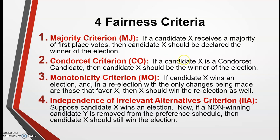The Condorcet criterion says if you have a Condorcet candidate, then that candidate should be the winner of the election. The monotonicity criterion says that if a candidate wins an original election and the only changes made in a re-election favor the original candidate, then that candidate should win the re-election as well. And the IIA says that if you have a candidate who wins an election and a non-winning candidate drops out, then that candidate should still be the winner.